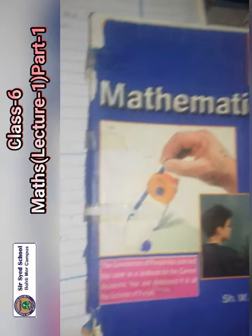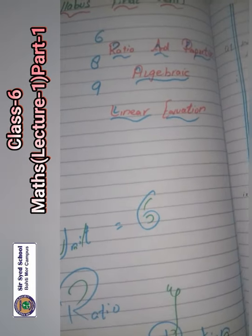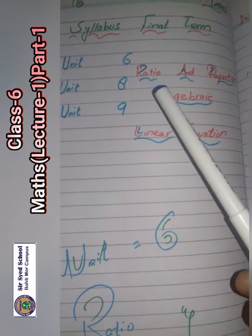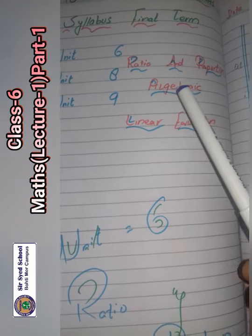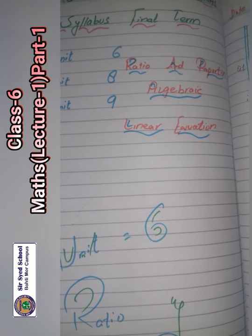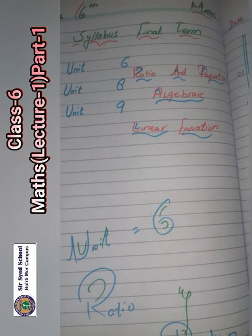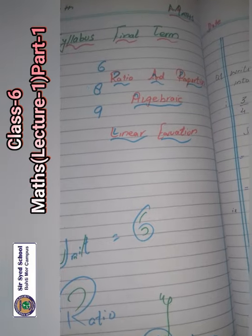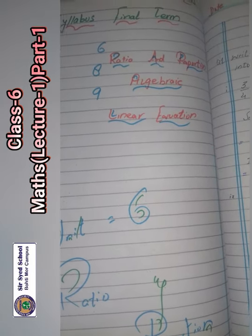Let's have a look at the syllabus for the final terms of mathematics. In the final terms, the syllabus includes Unit 6: Ratio and Proportion, Unit 8: Algebra, and Unit 9: Linear Equations. All the work done on notebook and book will also be included in your final terms.